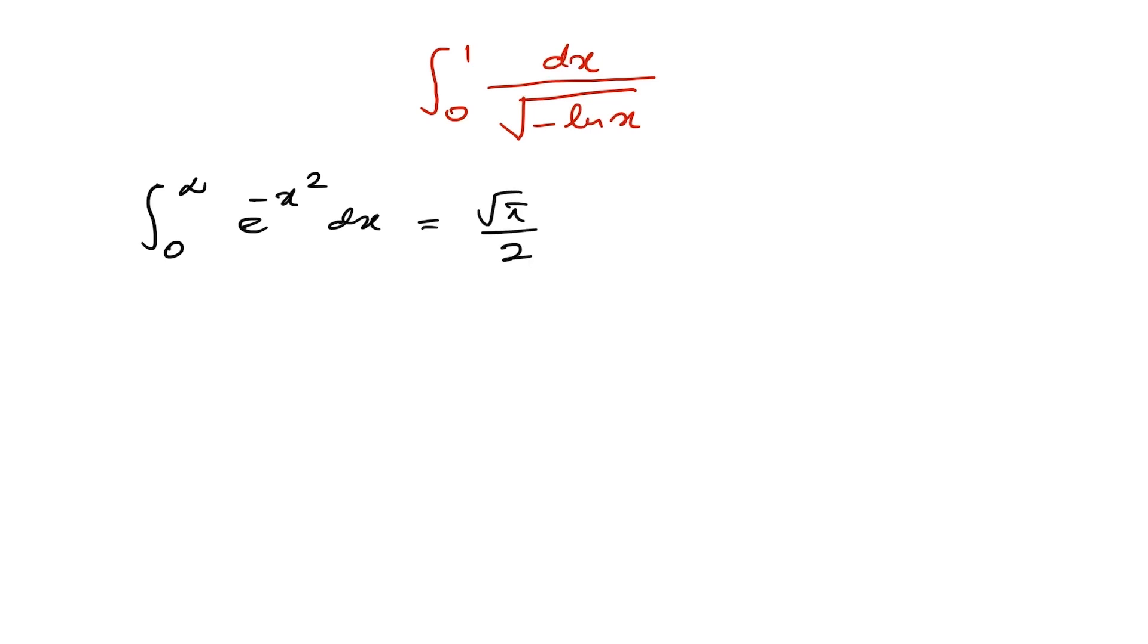So now for this integral I am going to take a substitution. I am going to take u is equal to e to the minus x square. Then if we take natural log both sides, natural log of u is equal to minus x square times natural log of e, which we know is 1.